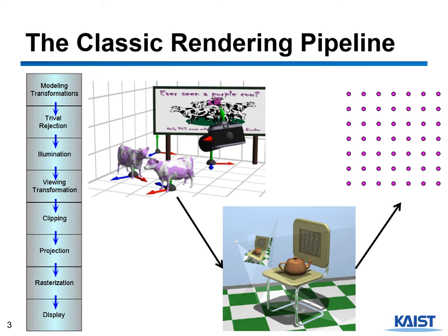Before moving on to ray tracing, I'd like to talk about the classic rendering pipeline. If you took undergraduate computer graphics, you already know this rendering pipeline, also known as rasterization. In the rasterization rendering pipeline there are many different steps. Basically, it starts from the modeling transformation — every single model is defined in its own modeling space, and then we translate, transform, rotate it, and position each individual model at some position in the 3D scene.